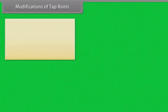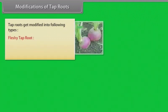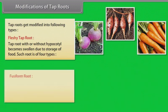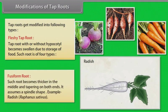Modifications of tap roots: tap roots get modified into the following types. Fleshy tap root — the tap root with or without hypocotyl becomes swollen due to storage of food. Fusiform root — such a root becomes thicker in the middle and tapering on both ends, assuming a spindle shape. Example: radish, Raphanus sativus.